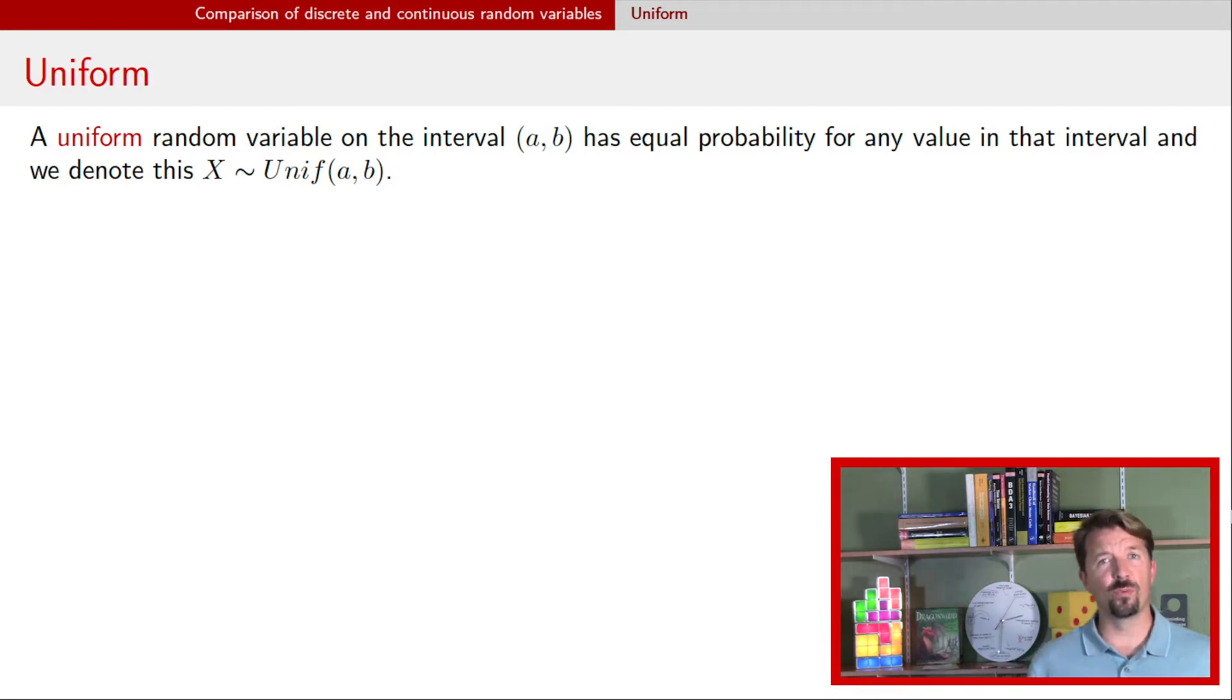To denote a uniform random variable we will use the notation X ~ Unif(a,b) where the a,b indicates the interval that is uniformly drawn from. So a would be the smallest possible value, b would be the biggest possible value, and any value in between those two would be equally likely.